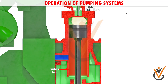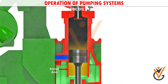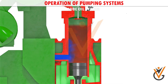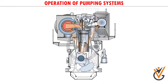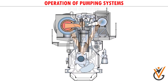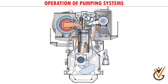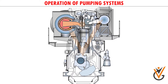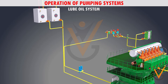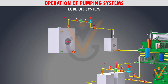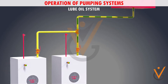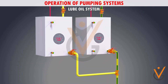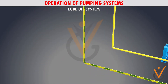Its main function is to enable the formation of a film of oil between the moving parts, which reduces friction and wear. The main engine has two separate lubricating oil systems: the main lubricating oil system and the cylinder oil system.